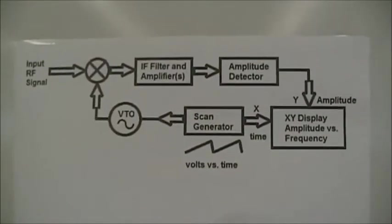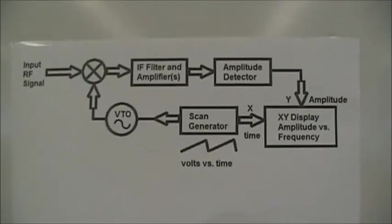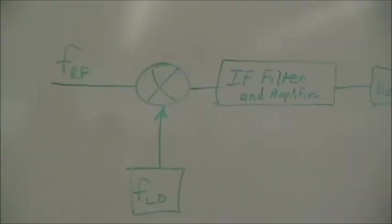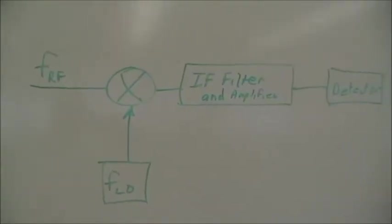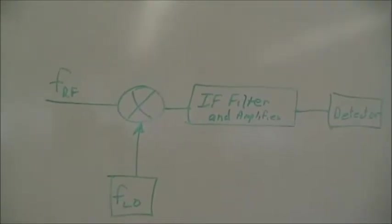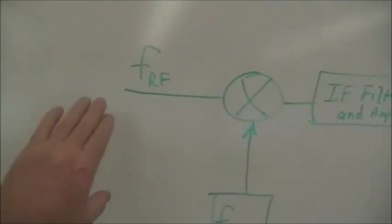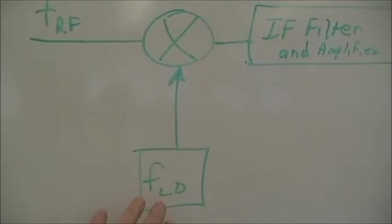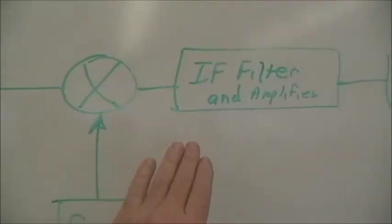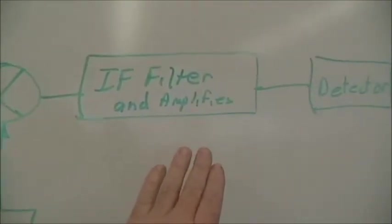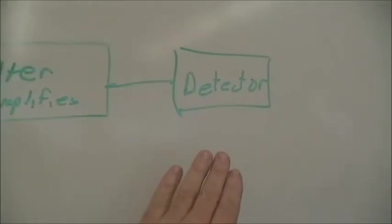There are numerous components that remind us of the AM receiver. Here is our AM receiver block diagram where you have the RF signal coming into the system. It is mixed with a local oscillator signal, put through an IF filter and amplifier system and then detected.